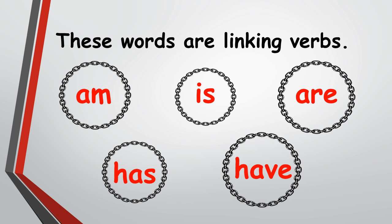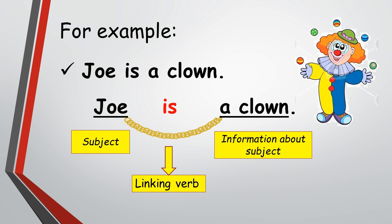These words are linking verbs: am, is, are, has, and have. For example, 'Joe is a clown.' In this sentence, Joe is the subject, 'is' is the linking verb, and 'a clown' is the information about the subject Joe.